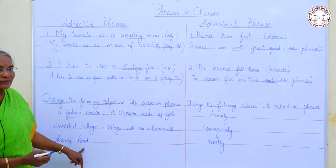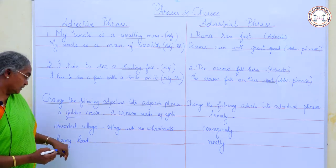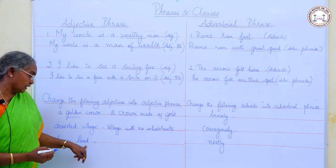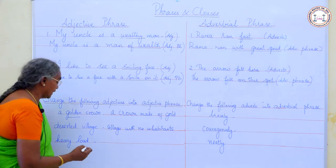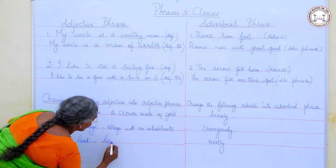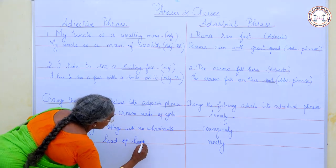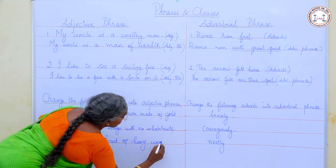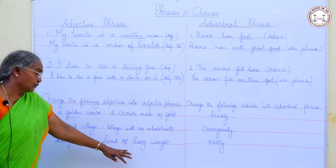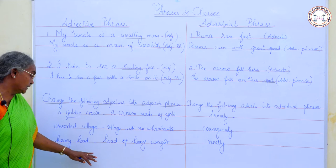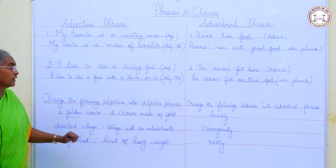'Heavy load.' Here, 'heavy' is the adjective describing the word 'load.' Change this into an adjective phrase: 'Load of heavy weight.' So, 'of heavy weight' is the adjective phrase — a group of words describing the load.